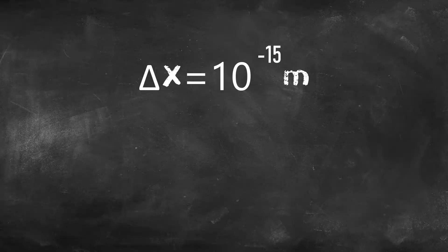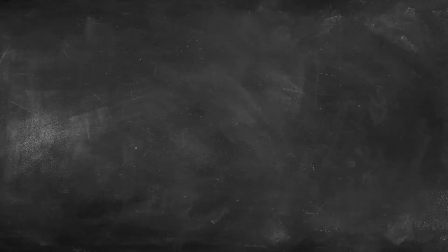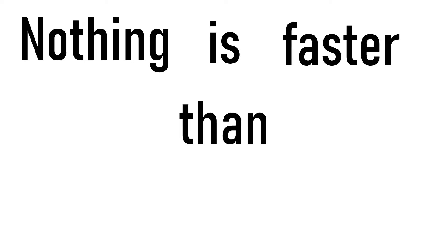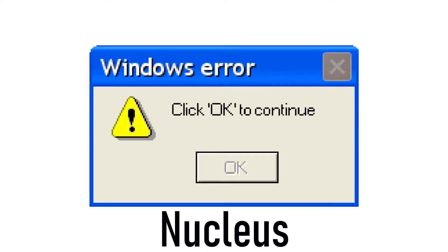Plugging this into the equation, we can find that if the electron must exist inside the nucleus, it must be going at at least this speed. But that's greater than the speed of light. Nothing is allowed to be faster than light, and so an electron existing inside a nucleus would basically cause an error in quantum physics. That's why our universe hasn't collapsed.